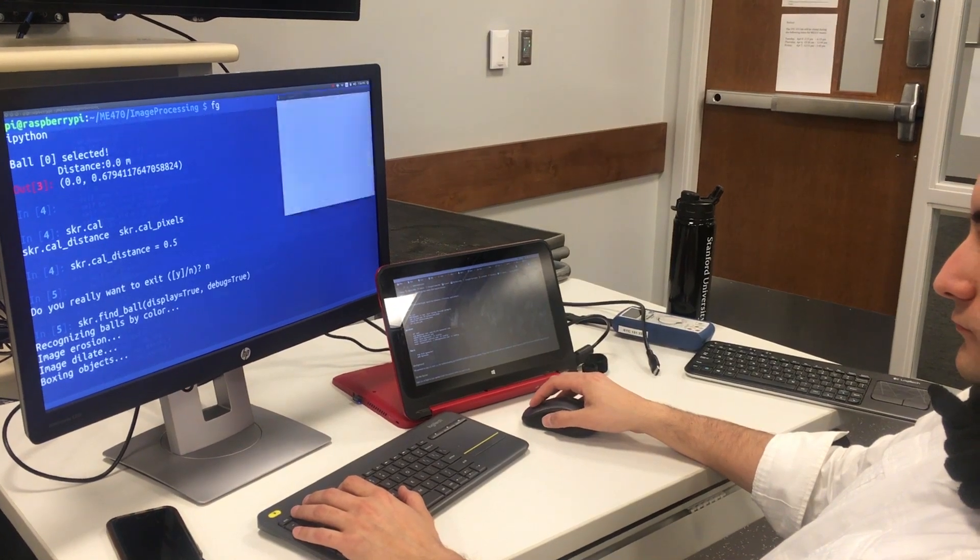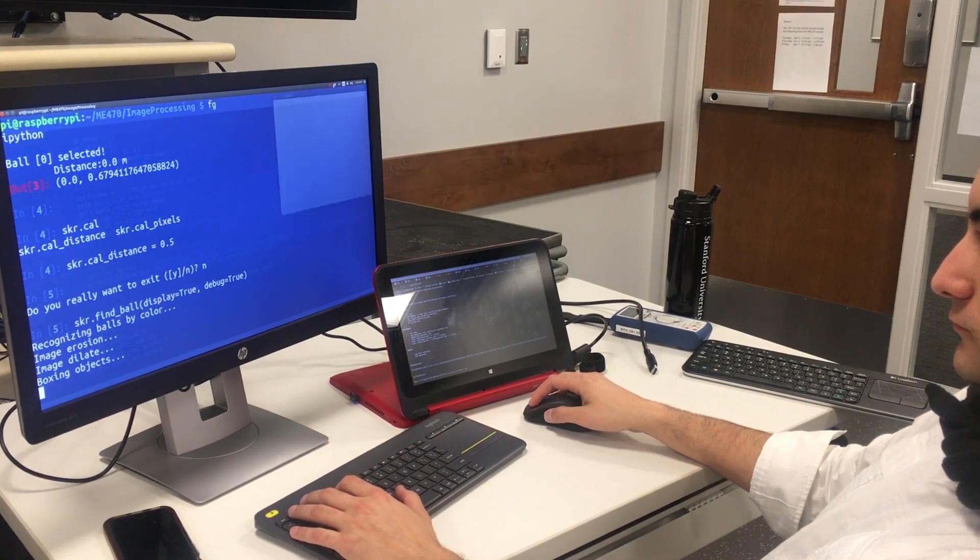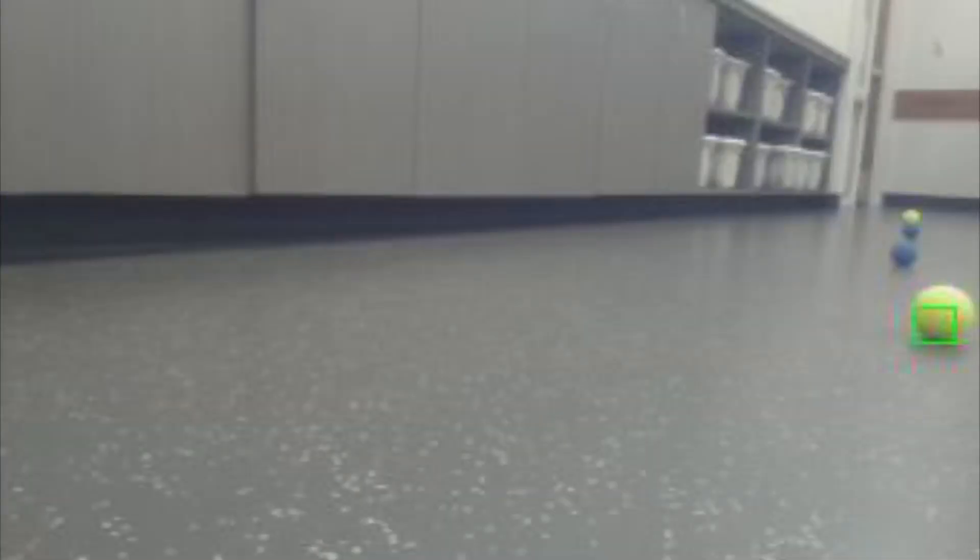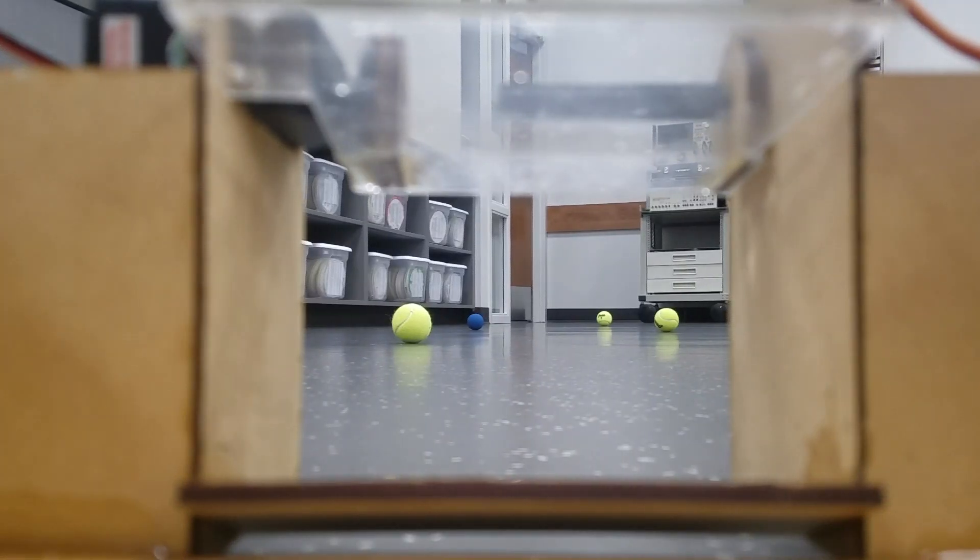Then the photo goes through a morphological dilation process to enlarge the tennis balls back to their original size. The resultant objects, which should be tennis balls, are then measured. The diameter of these tennis balls are used to determine how far away they are from the bot.